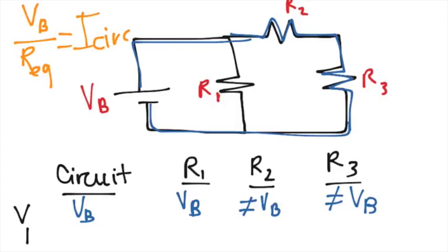So now we're going to fill in our chart here and we're going to say the current for the circuit is I circuit. But the current across R1 is not going to be the same as that. We know the voltage at R1 is VB and we know the resistance is R1. So we're going to say that the current at R1 is VB over R1.